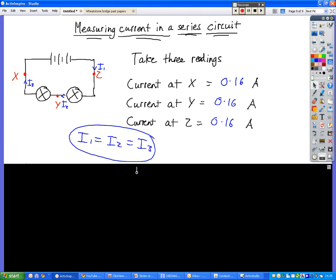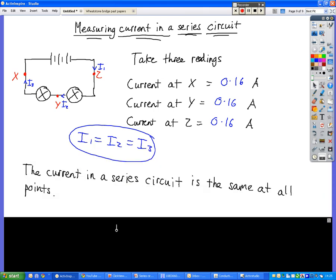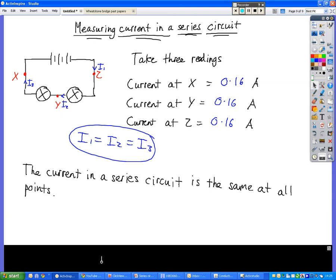We can say that I1 equals I2 equals I3. In summary, the current in a series circuit is the same at all points. Current will only change if it's got more than one direction in which it can go. In a series circuit there is only one single loop of wire, so the current doesn't change.